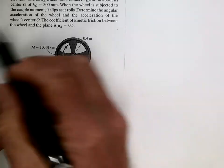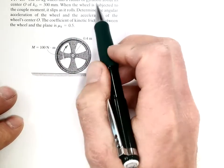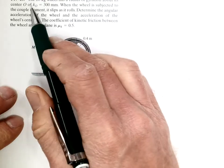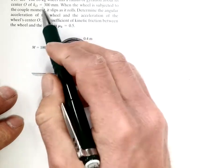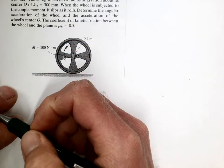Alright, let's solve problem F17-15. The 20-kilogram wheel has a radius of gyration about its center O of 300 millimeters.